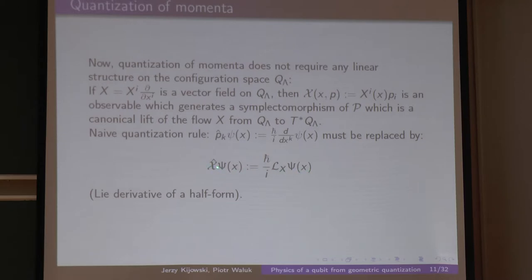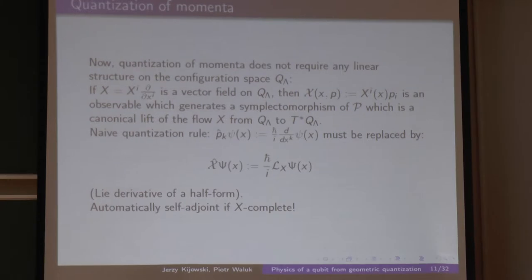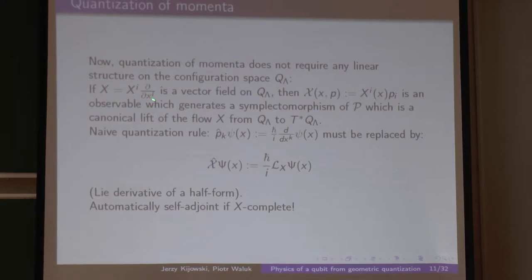This naive quantization rule, written in terms of scalar wave functions and apparently working only in linear coordinates, must be replaced by a universal rule that works in any coordinates: the quantized version of an observable linear in momenta is just the derivative of the half-density. This operator is automatically symmetric, and a simple theorem shows it is self-adjoint if and only if the vector field X on Q is complete — meaning it defines a global group of diffeomorphisms.